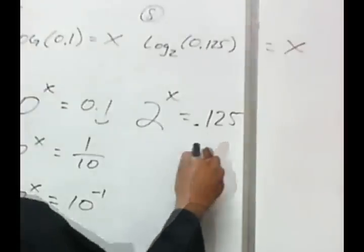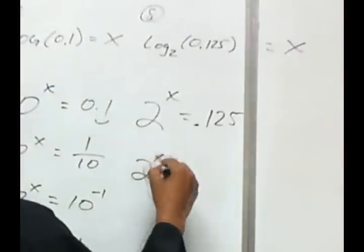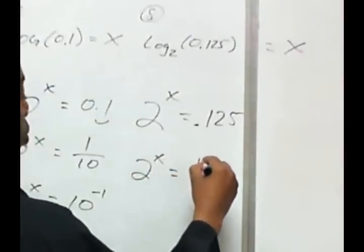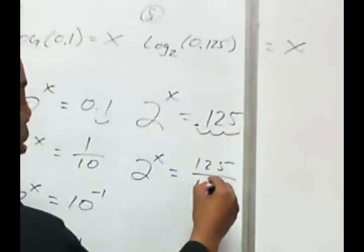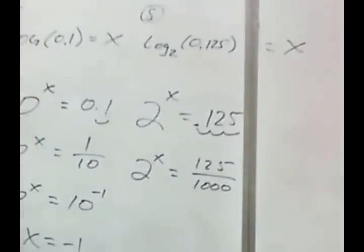Now, I'm going to convert this decimal into a fraction. So, this will be the numerator of 125. And, since we have three places behind the decimal, the denominator will be 1,000.